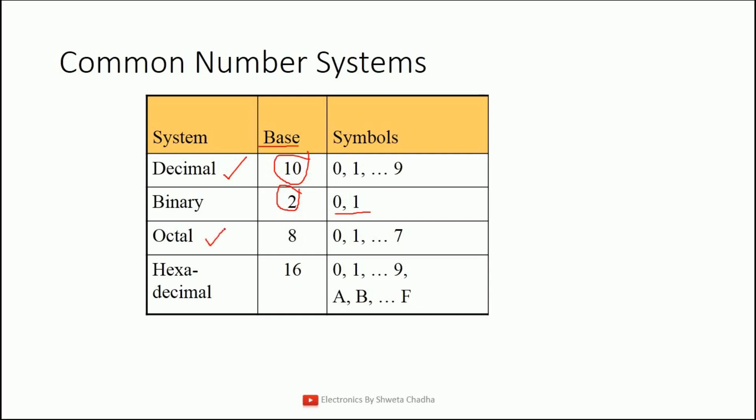Next is the octal number system. Octal means 8. That means from 0 to 7, these symbols are allowed. 8 and 9 are not allowed. Only 0 to 7 symbols are allowed.